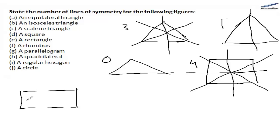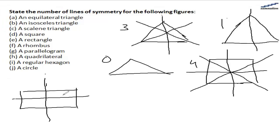For a rectangle, we have one vertical and one horizontal line of symmetry. There is no diagonal line of symmetry, because if we draw the diagonal, these points will not be at the same equal distance. So, there are two lines of symmetry only.